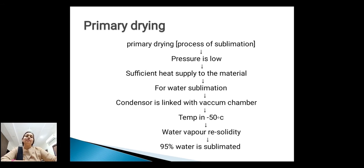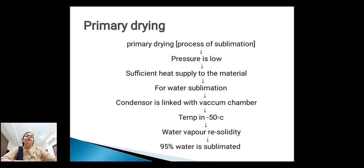Next, primary drying. Primary drying process is also known as sublimation. In this process pressure is low and sufficient heat is supplied to the material. For water sublimation, a condenser is linked with the vacuum chamber and at that time the temperature is minus 50 degrees centigrade. Water vapor is also re-solidified. At the end of this process, 95 percent of water is sublimated from the material.